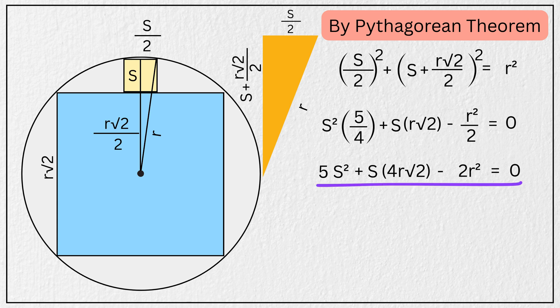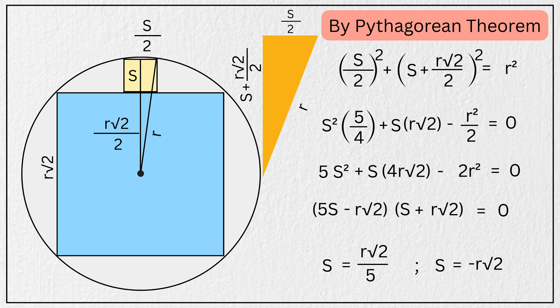Now with a little algebra, we can factor this quadratic expression as the quantity five times s minus r times the square root of two, multiplied by the quantity s plus r times the square root of two, equals zero. This factored form gives us two possible solutions for s. The first value is r times the square root of two divided by five. The second value is negative r times the square root of two. But since length cannot be negative, we can ignore this second value. So we have s is equal to r times the square root of two divided by five.